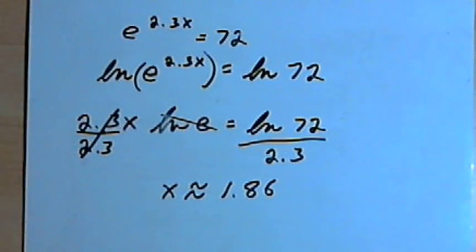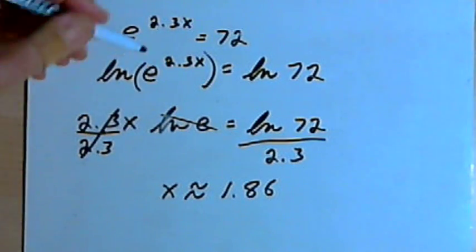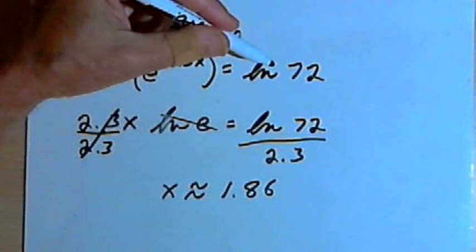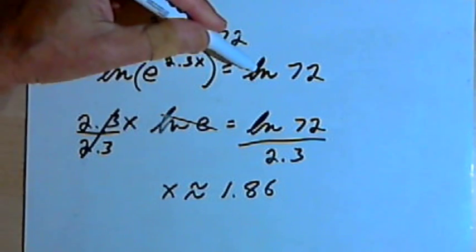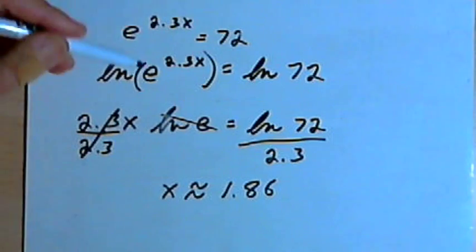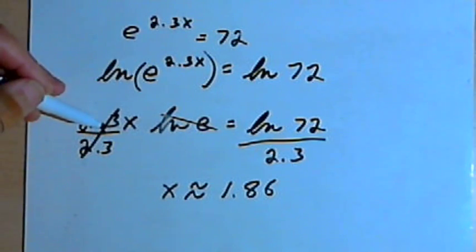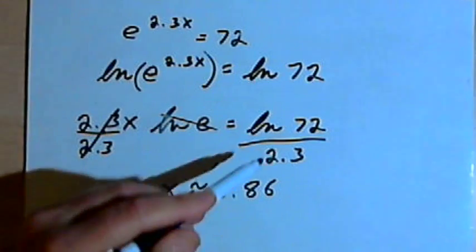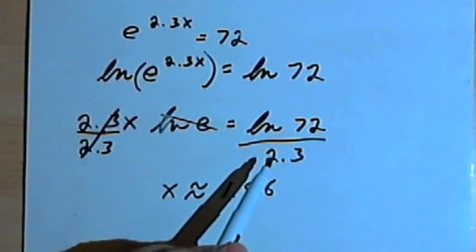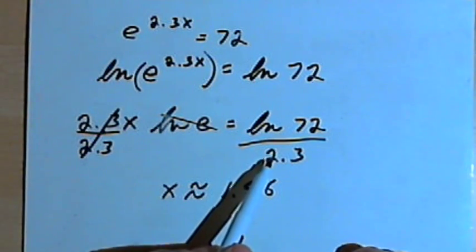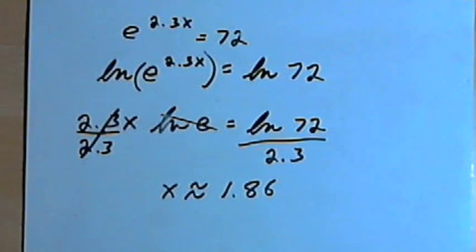And this was basically the same approach — we just took the log of both sides. Since I had a base e, I used the natural log. I took my exponent, made that into a coefficient, isolated the x, and solved the expression that x was equal to. So take care, I'll see you next time.